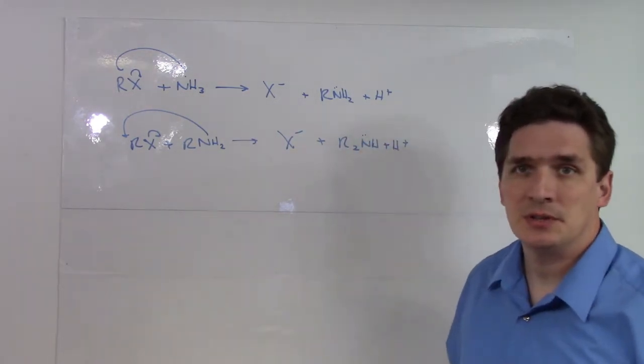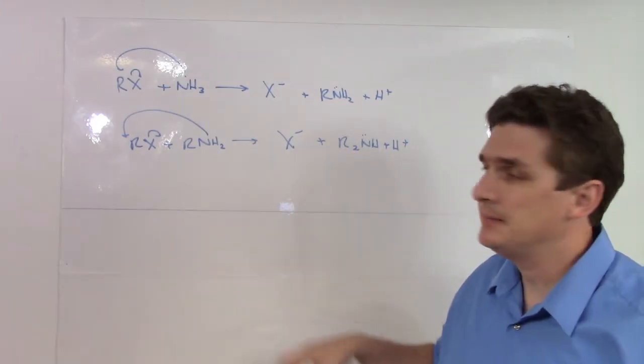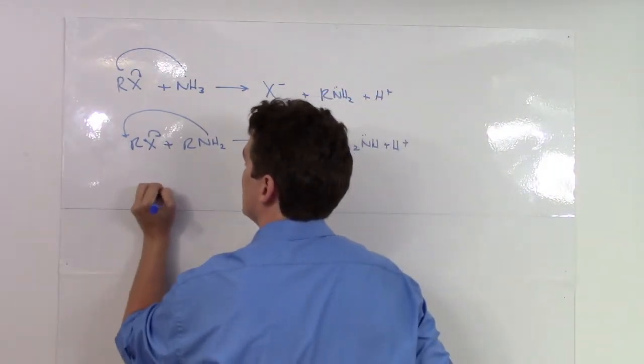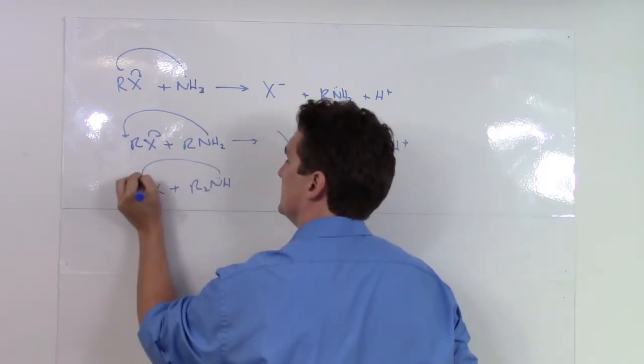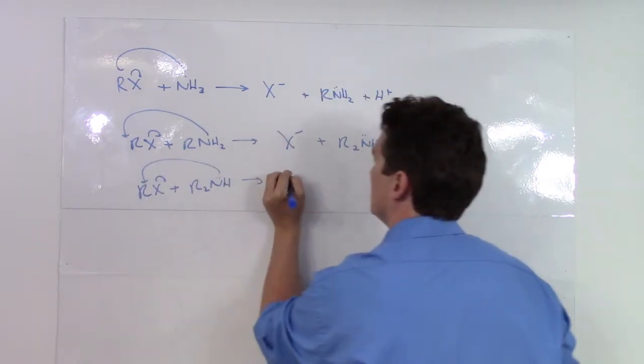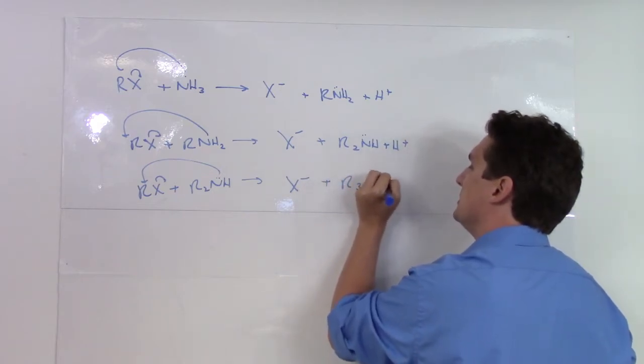And we end up with secondary amine. Well, we still got a lone pair, right? If we've still got RX in the solution and we've got this compound, it can attack the halogen, displace it, lose the hydrogen, and now we end up with a tertiary amine.